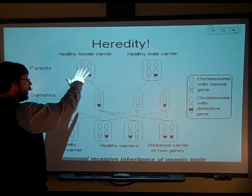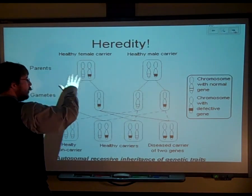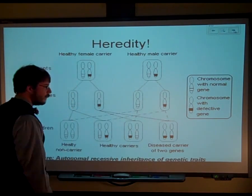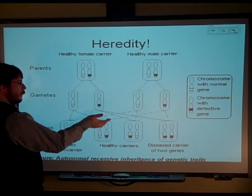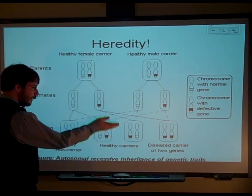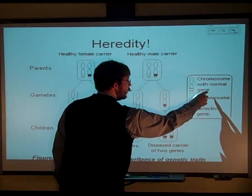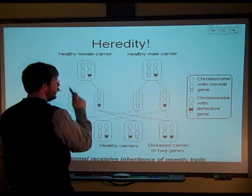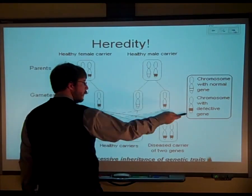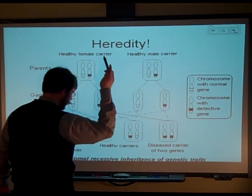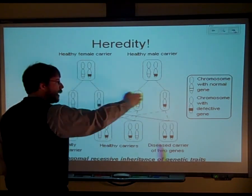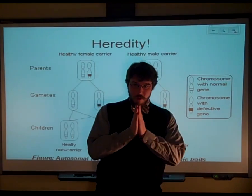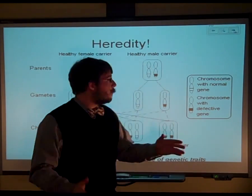So here we have a little diagram representing — you can see the parents — and let's say there's some kind of defective gene. This is what the normal gene would look like, and here's the defective gene. When we make the gametes, that's meiosis, those chromosomes are split apart.